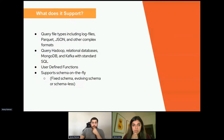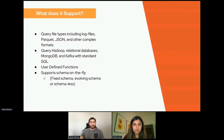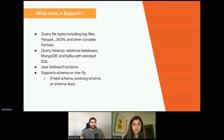We spoke about the various file types. You can query file types including log files, Parquet, JSON, and other complex formats. You can even join, for example, a JSON file to a simple CSV or worksheet. You can query Hadoop, relational databases, MongoDB, and Kafka with standard SQL. Drill also supports UDFs, which we'll be showing examples of later in the presentation.